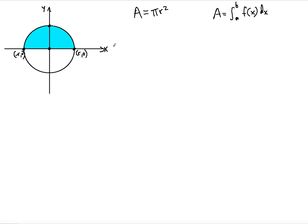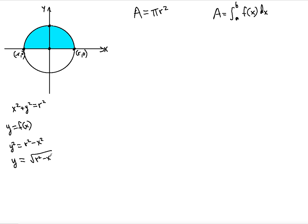Since the circle is centered at the origin, the equation of the circle is x squared plus y squared equals r squared, because the radius is r. We should rewrite y in terms of x, so y squared equals r squared minus x squared. Since we're talking about the upper portion of the circle, we only consider positive y values, so taking the square root gives y equals the positive square root of r squared minus x squared. That's your function of x.